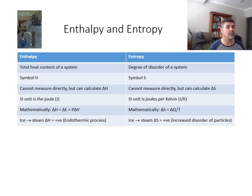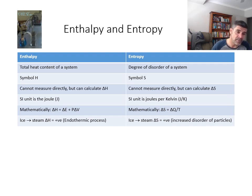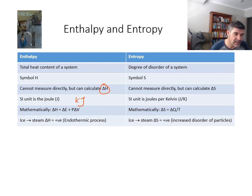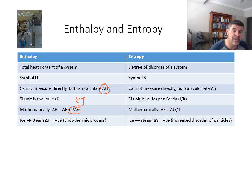Let's quickly look at the difference between enthalpy and entropy. Enthalpy is about total heat content, has the symbol H, and we can't measure it directly, so we measure the change in enthalpy — delta H. The SI unit of enthalpy is the joule, and very often we express things in kilojoules because the amounts of energy are so high. Mathematically, the enthalpy change in a system can be equivalent to the internal energy change plus the product of pressure and change in volume. Sometimes pressure is held constant, so the P times delta V term is zero, effectively no change, and that term cancels out — giving us delta H equal to delta E.